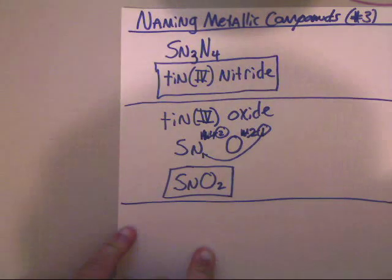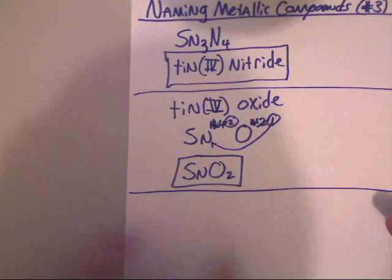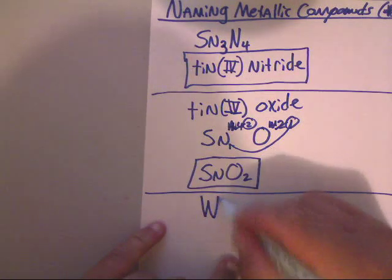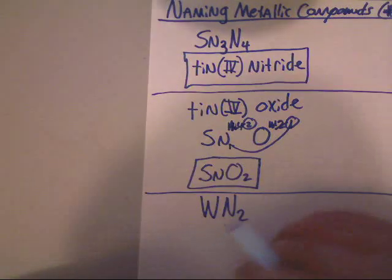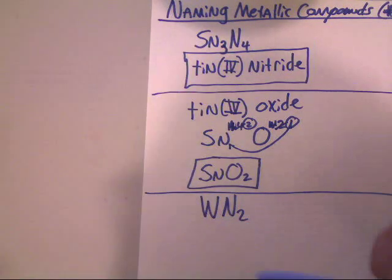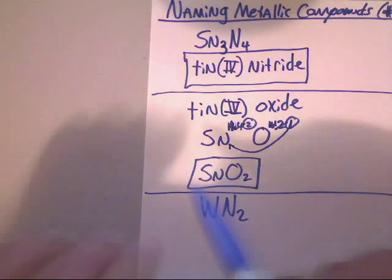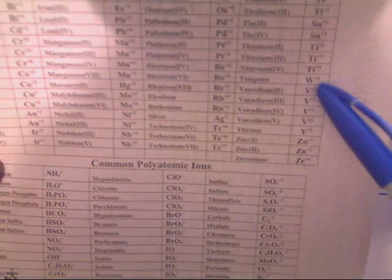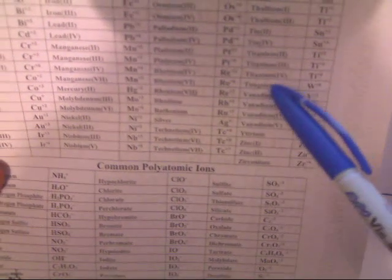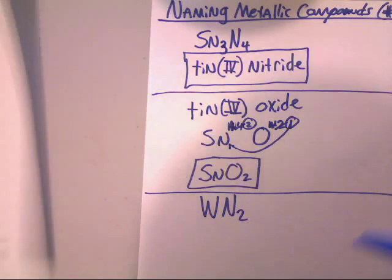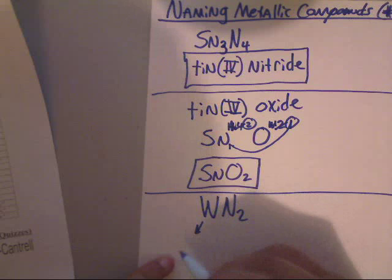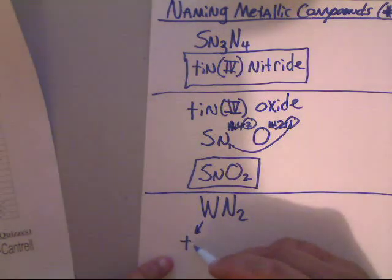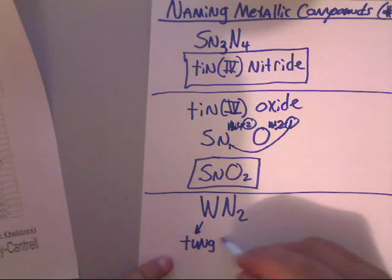Now let's do another one. Let's say that they gave you the formula of the following and they want you to get the name. So they gave you WN₂. Now W, if you look on your yellow sheet, W is tungsten. It's in the back of the yellow sheet because it's in the D block. And when you look, you'll notice that tungsten only has one ion. It does have a positive 6 charge, but there's no Roman numeral written on tungsten. So it doesn't need Roman numerals. So we know this is tungsten. So we will write down tungsten.